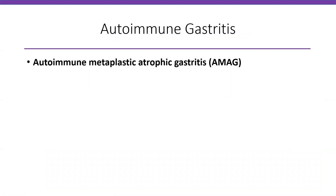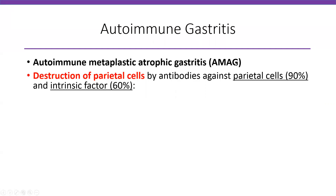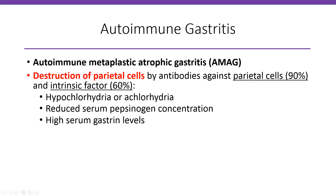Moving to autoimmune gastritis, also called autoimmune metaplastic atrophic gastritis or AMAG. There is destruction of parietal cells by anti-parietal cell antibodies in 90% of cases, or antibodies against intrinsic factor. With loss of parietal cells, you have hypochlorhydria or achlorhydria, reduced serum pepsinogen concentration, and high serum gastrin levels. Autoimmune gastritis is often associated with other autoimmune diseases such as Hashimoto's thyroiditis and Addison disease.